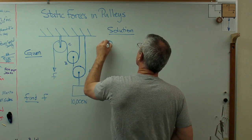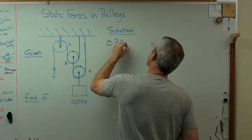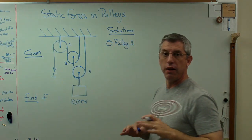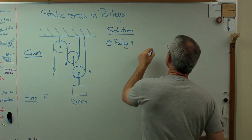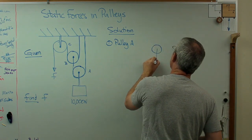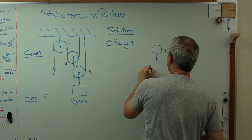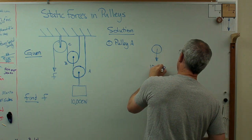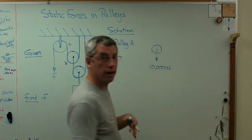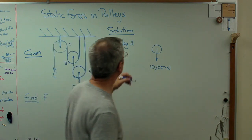So to start here, let's look at pulley A. And let's look at the forces acting on this. This is kind of like the method of joints, like I said. So I've got a force down of 10,000 newtons. That's the force exerted by the weight.